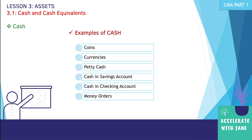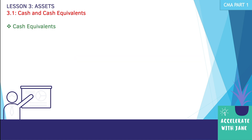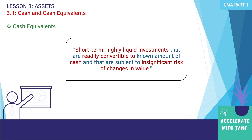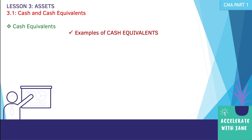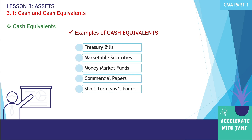Cash equivalents, as defined by the standard, are short-term highly liquid investments that are readily convertible to a known amount of cash and that are subject to insignificant risk of changes in value. Short-term here means within one to three months. It is highly liquid, meaning readily convertible into cash, and any changes in value have only an insignificant impact. Examples of cash equivalents include treasury bills, marketable securities, money market funds, commercial papers, and short-term government bonds.